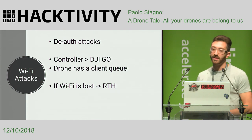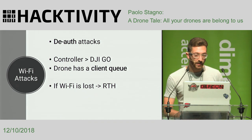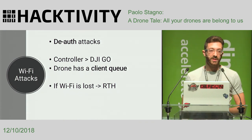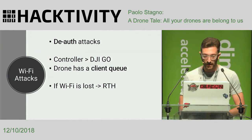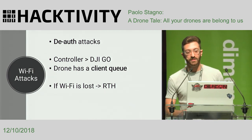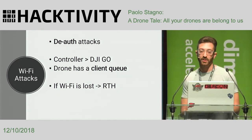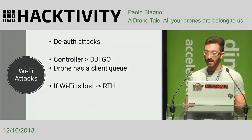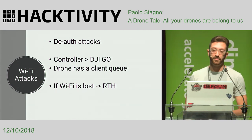Drones are not exempt from classic Wi-Fi attacks. We have some predefined behavior in the case of a deauthentication attack. The deauthentication attack will force the disconnection of the phone or controller from the drone. If a phone is disconnected from the ground controller, nothing happens — the ground controller still holds priority and continues to drive the drone. However, if we perform a deauth attack to disconnect the controller from the drone, that will trigger the automatic return-to-home functionality.